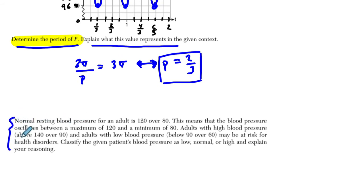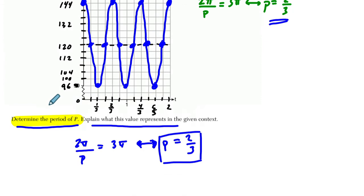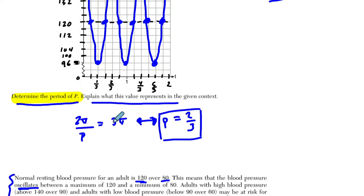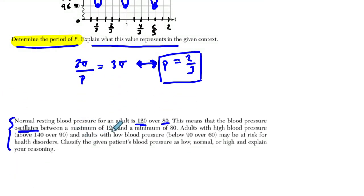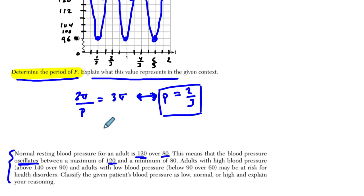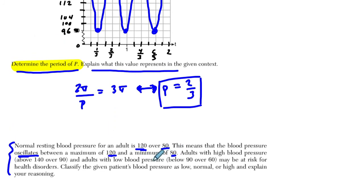They're not really asking you to explain much about blood pressure at all, other than what you see happening in the cycle. That it goes from a maximum down to a minimum and then back up again. That's really it. Now down here there's a lot going on. It says normal resting blood pressure for an adult is 120 over 80. This means that the blood pressure oscillates.